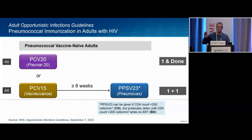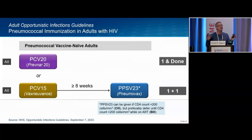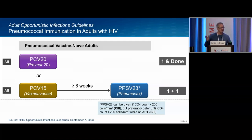The newest vaccines are PCV15 — called VaxNuvance — and PCV20, or Prevnar 20, which you've probably seen heavily advertised. Here's the current recommendation, much simpler than before: if you use the conjugate 20, you can be one and done. Anybody who comes in, regardless of CD4 count, never vaccinated — one pneumococcal vaccine and they're done. That's a game changer from the very complicated schedule we used to have.